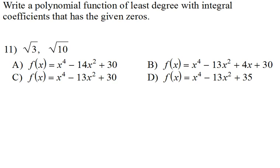If square root of 3 is one of our answers, then the negative square root of 3 is also another answer. So there's two roots. If positive square root of 10 is an answer, then negative square root of 10 is also an answer. So this is actually a fourth degree polynomial.